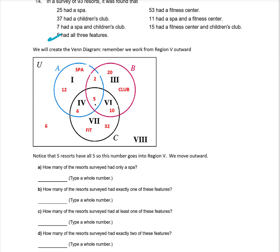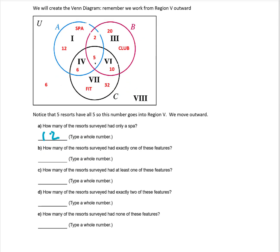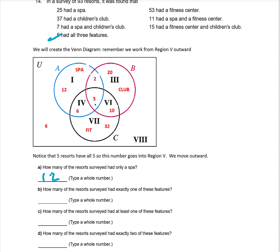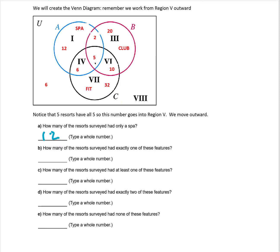Now I can answer the questions. How many resorts had only a spa? That's region one, which is 12. How many had exactly one of these features? That's regions one plus three plus seven: 12 plus 20 plus 32, which adds up to 64. How many had at least one? That's everything in the Venn diagram except the six with none, so 87 have at least one. How many had exactly two? Regions two, four, and six add up to 18.